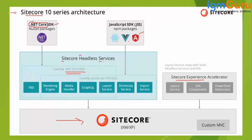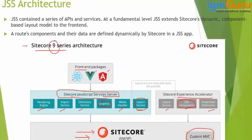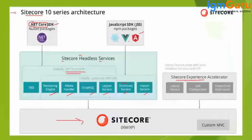Within Sitecore Headless Services, .NET Core and JSS share four common components: layout services, GraphQL, image/media handler, and rendering. Within JSS specifically, dictionary and import services are private to JSS and are not available with .NET Core, but the other four modules are available with both. So while in Sitecore 9 you could only use Sitecore JSS, from Sitecore 10 you can use either .NET Core or JSS.